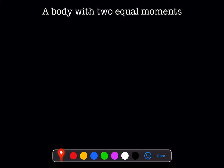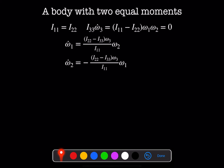Now imagine a body with two equal moments — say i11 equals i22. The torque-free Euler equation for omega-3 says i33 times omega-3-dot equals (i11 minus i22) times omega-1 times omega-2, but this term is obviously zero, so omega-3 is always constant. The torque-free Euler equations for omega-1-dot and omega-2-dot then read: omega-1-dot equals some constant (i22 minus i33) times omega-3 divided by i11, times omega-2; and omega-2-dot equals minus that same constant times omega-1. Calling that constant capital Omega, we have omega-1-dot equals big-Omega times omega-2, and omega-2-dot equals minus big-Omega times omega-1.